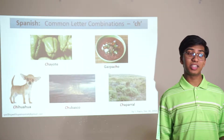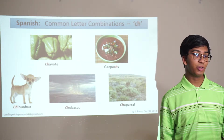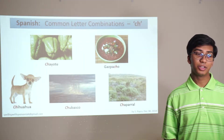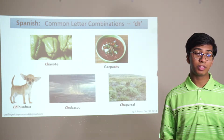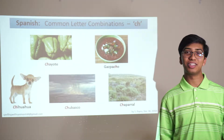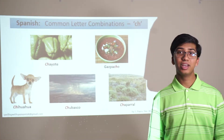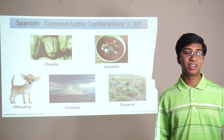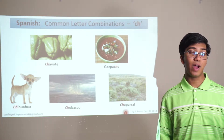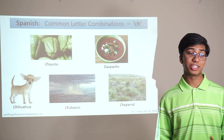The first common letter combination is CH for the CH sound. For example, gazpacho is a type of soup usually served cold. You have chihuahua — most of us have encountered the dog or seen the word before. You have chubasco, a severe squall of rain and wind especially along the west coast of Central America. And you have chaparral, a dense impenetrable thicket of stiff or thorny shrubs or dwarf trees.